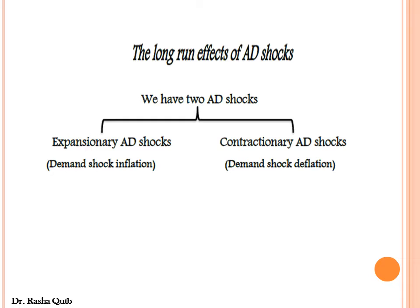On the other side, when there are negative aggregate demand shocks — a decrease in autonomous expenditures like investment, government expenditures, a decrease in wealth, or an increase in taxes — we call this negative or contractionary aggregate demand shocks, also known as demand shock deflation.